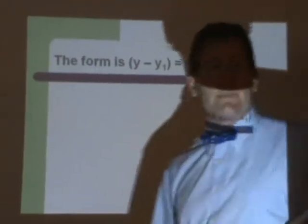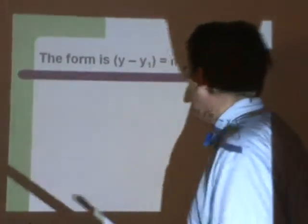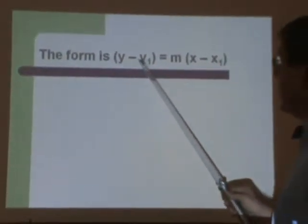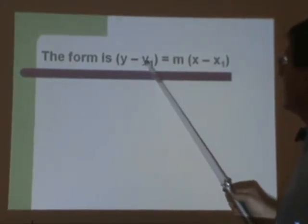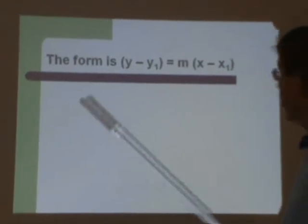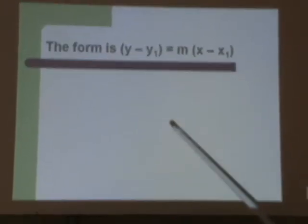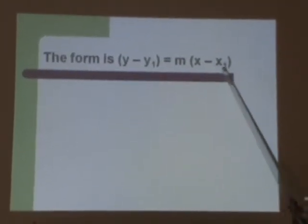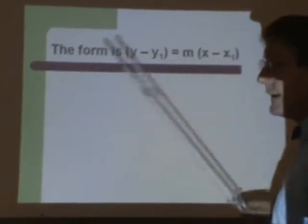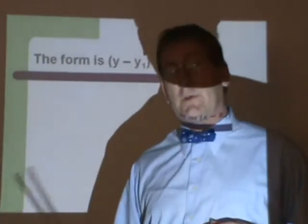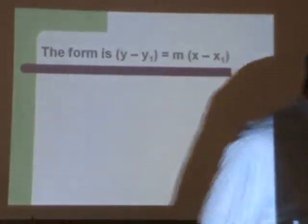We have here y minus y1 equals m times in parentheses x minus x1. Now the practical upshot of this is we can read it as y1 means the y of our point, or the y of point 1. The x1 over here on the other hand, we read it as the x of our point, the x of point 1. And the m, as it is in many other places, is the slope.